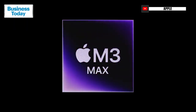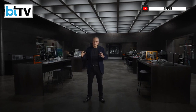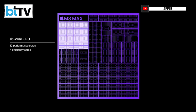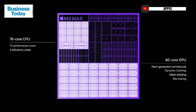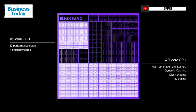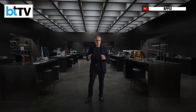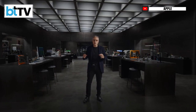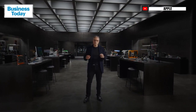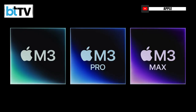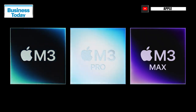M3 Max takes it even further to deliver a tremendous leap in performance for the most demanding Pro workloads. It features a 16-core CPU and a 40-core GPU, and now supports up to a massive 128 GB of unified memory, enabling AI developers to work with even larger transformer models with billions of parameters. M3 Max is up to 80% faster than M1 Max — a giant leap in performance in just two years. That's the groundbreaking M3, M3 Pro, and M3 Max.